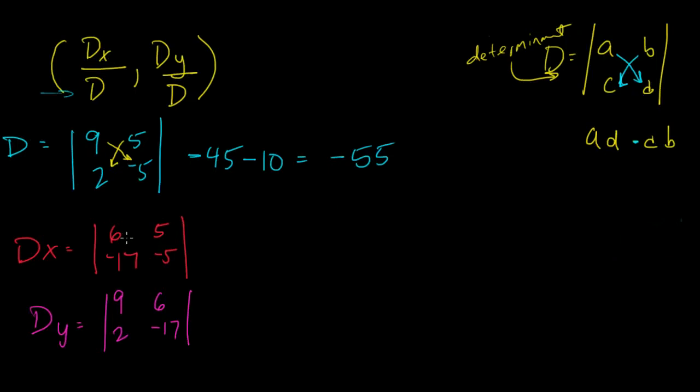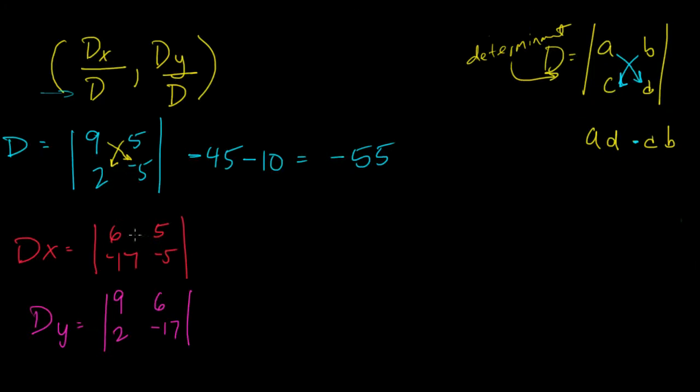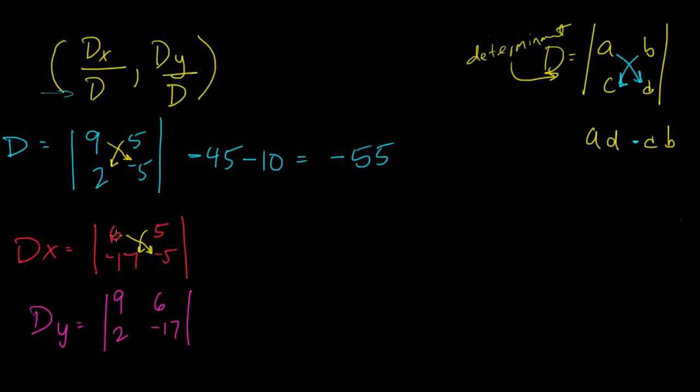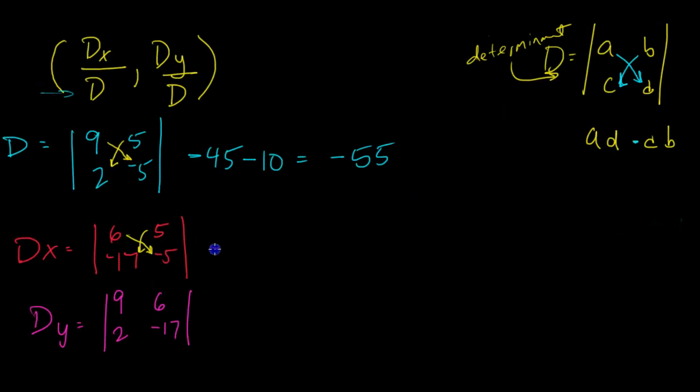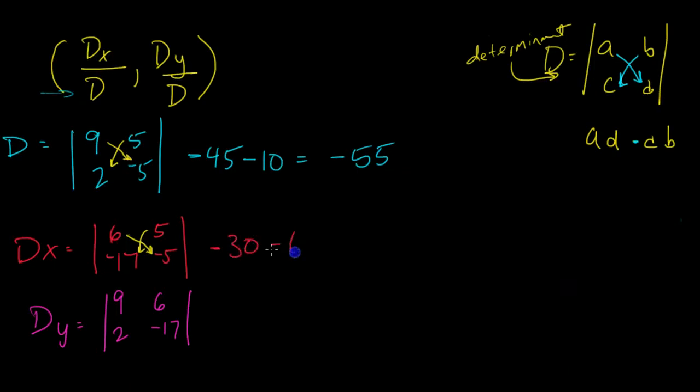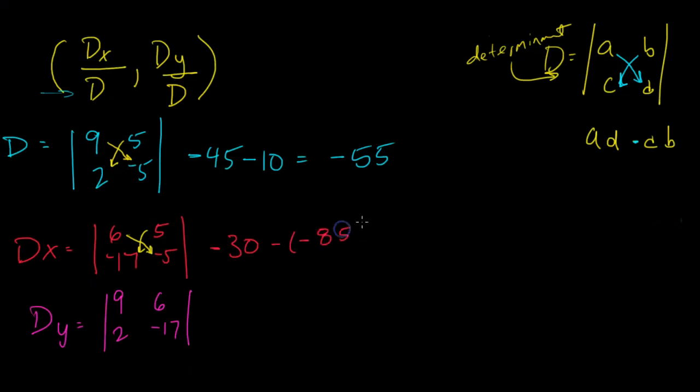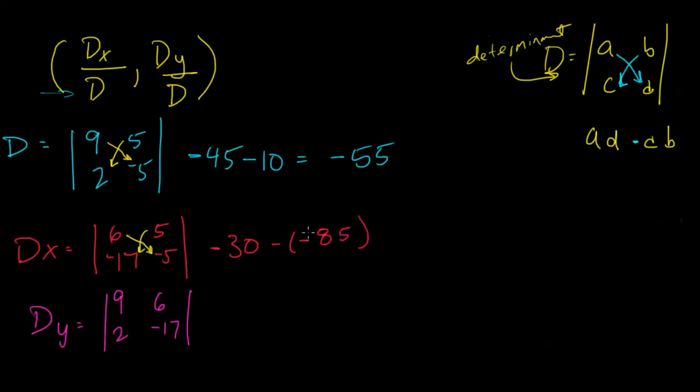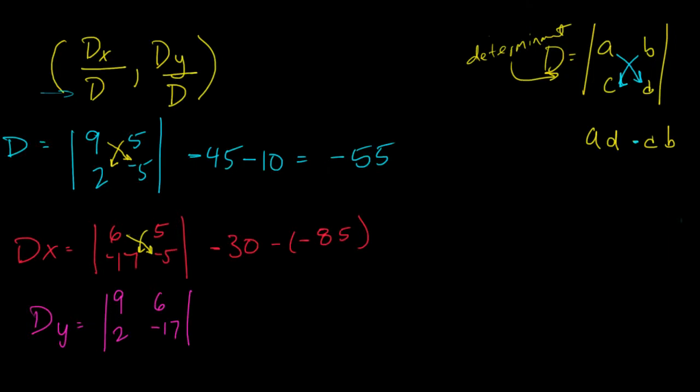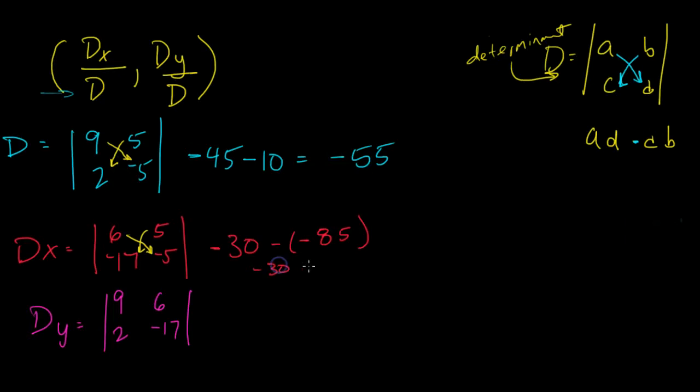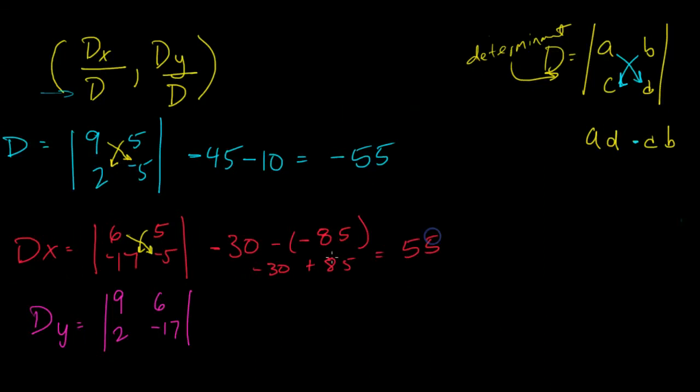My d sub x will be these two numbers multiplied, subtract these two numbers multiplied. So I'll have 6 times negative 5, which gives me negative 30, minus negative 85. 5 times 17 is 85, and a negative times a positive is negative. Which will be negative 30 plus 85, or a positive 55.